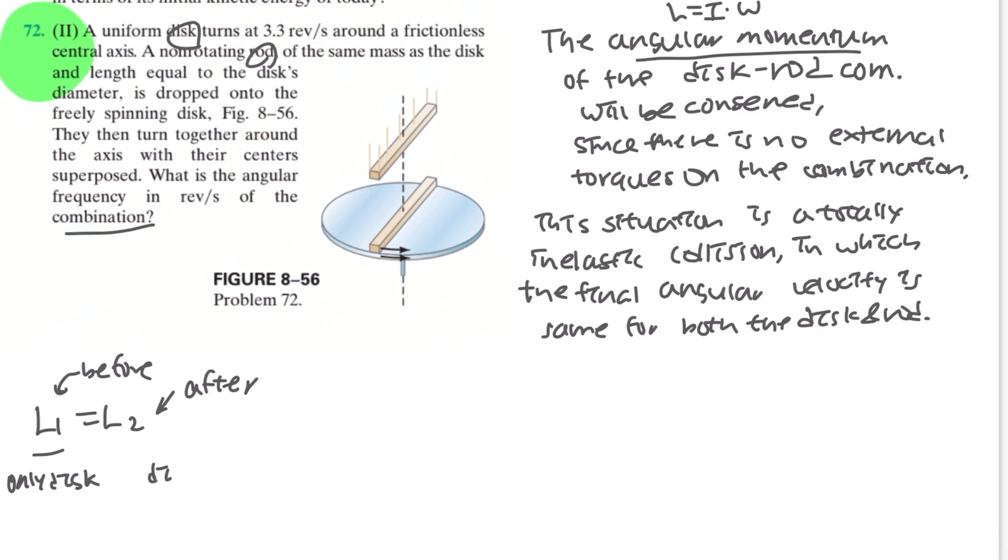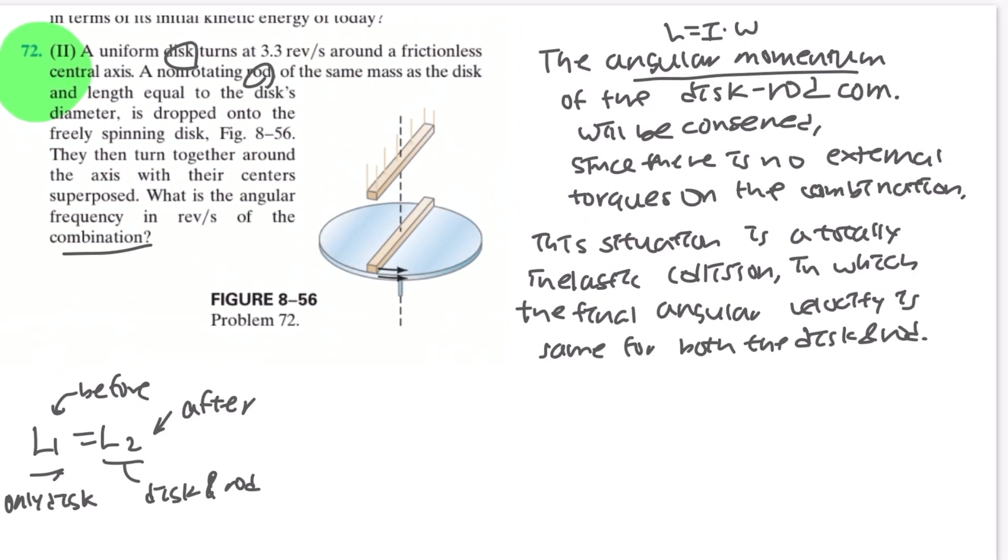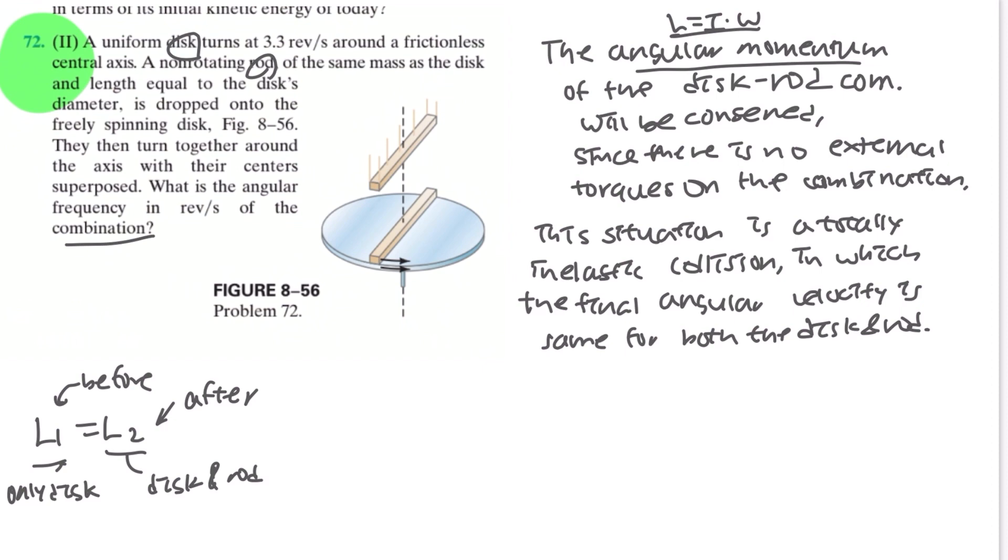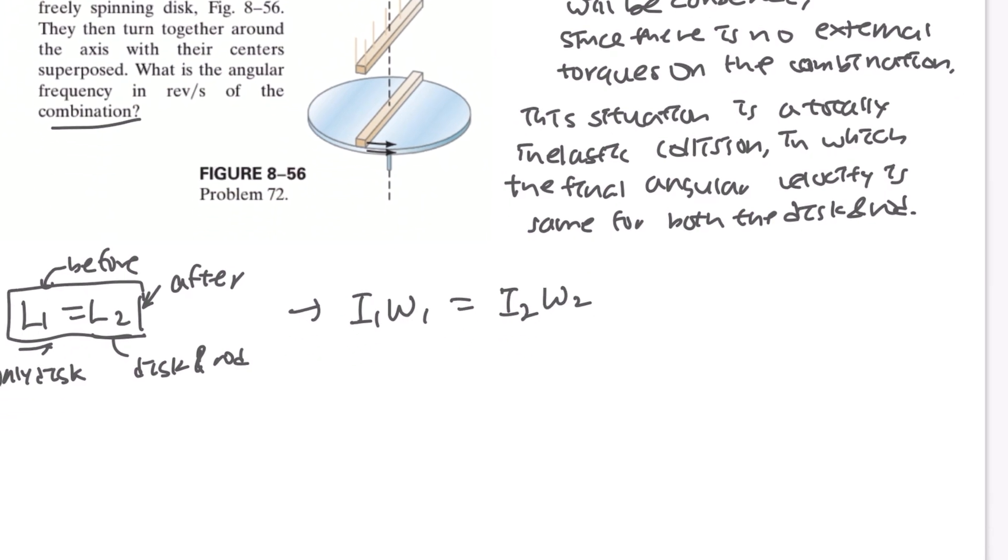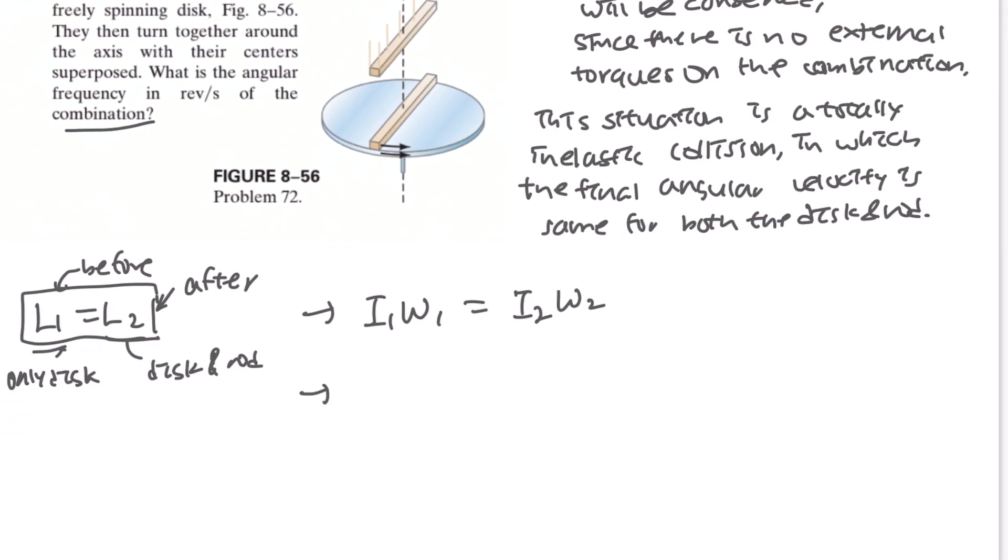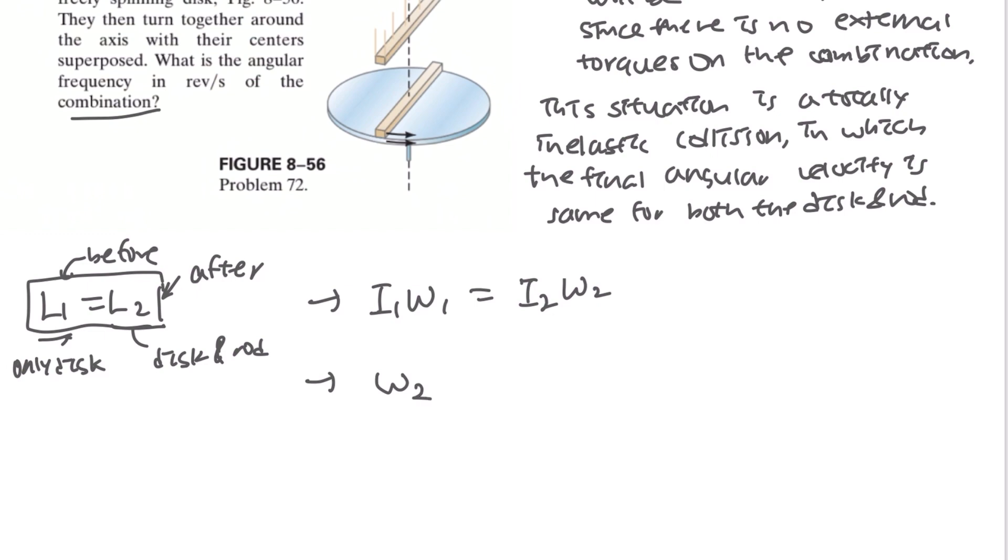And L2, because it is the angular momentum after the collision, there will be disc and rods included in these values. And also, always remember because L equals I times omega, this formula could be changed to I1 times omega1 equals I2 omega2. And if we organize this formula with omega2 being on the left, it will be omega2 equals omega1 times I1 over I2.